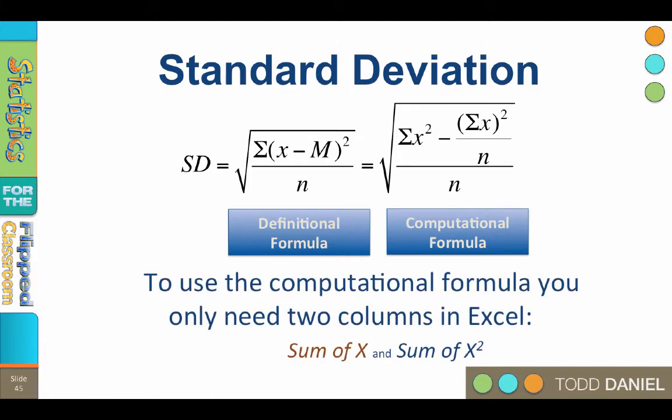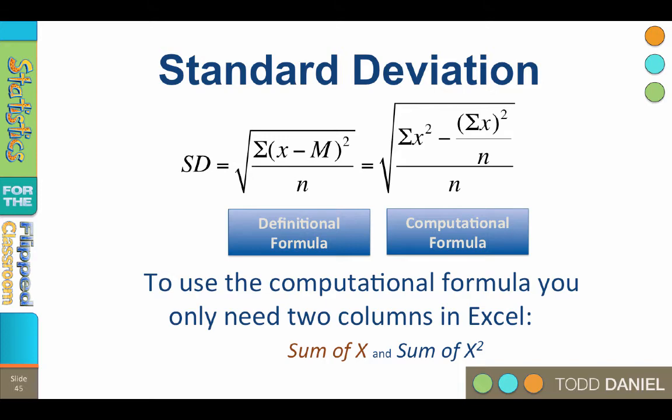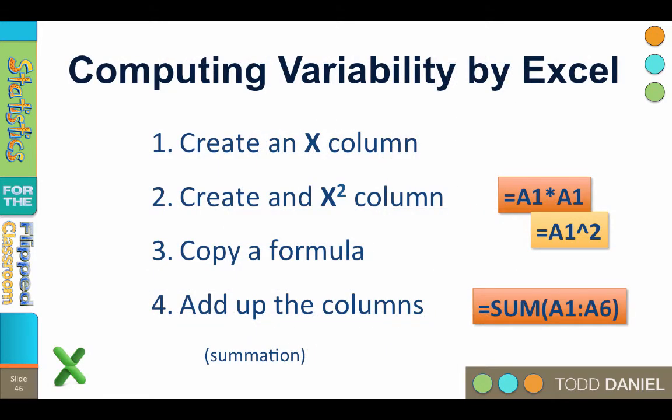To use this formula, you will only need two columns in Excel: the sum of X and the sum of X squared. Here's our strategy: we are going to create a data set in Excel. We will put all of our data into the first column, called the X column. We will then create an X squared column using a formula, copying it to the lower cells as necessary, and finally we will add up the columns using summation to create the sum of X and the sum of X squared. These values will be plugged into our new formula.